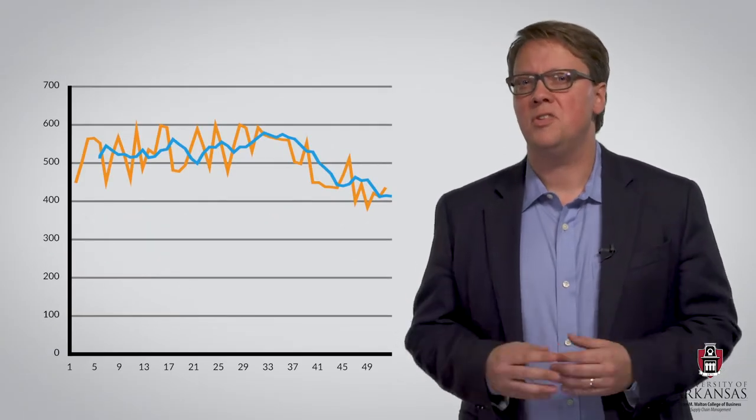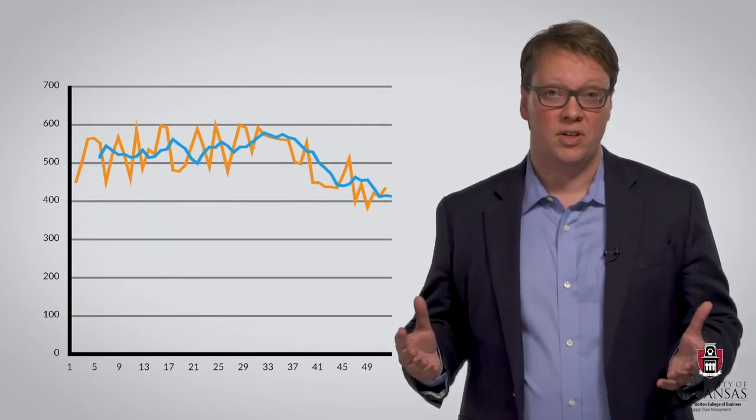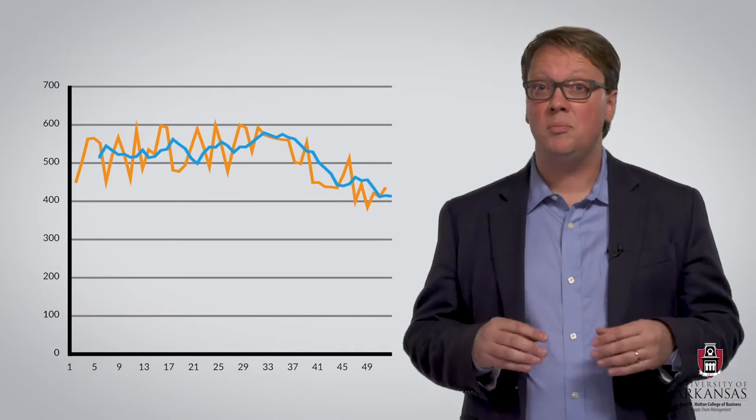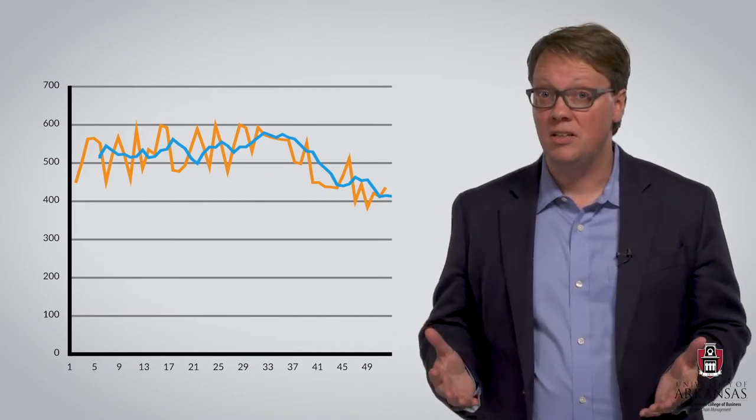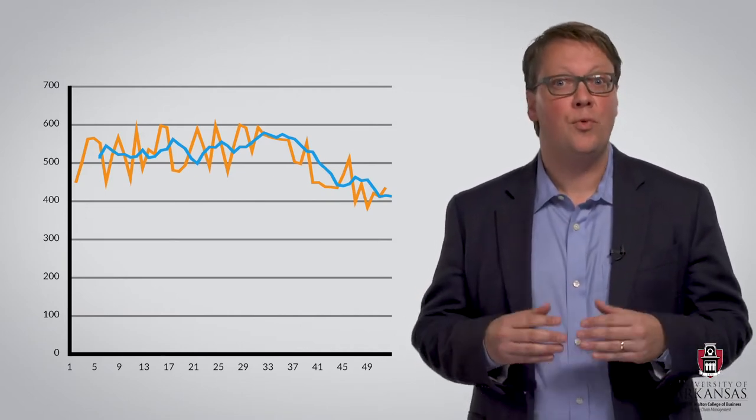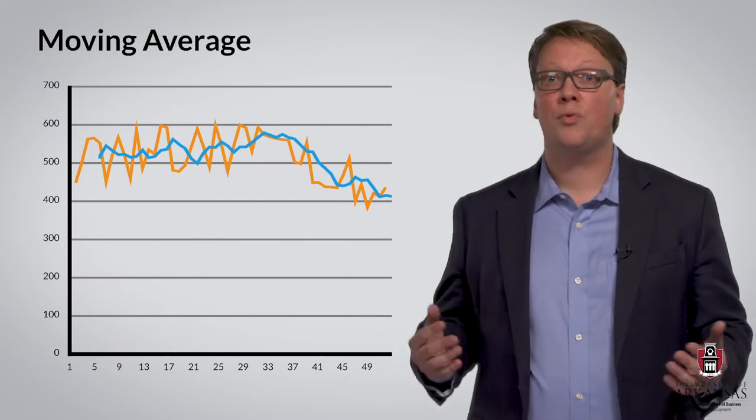To start off this conversation, let's take a look at a data set. The orange line plots actual sales data, and the blue line shows the four-period moving average forecasts.